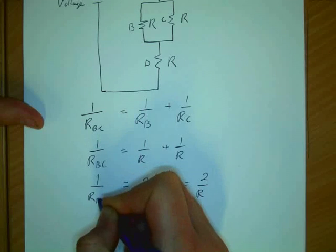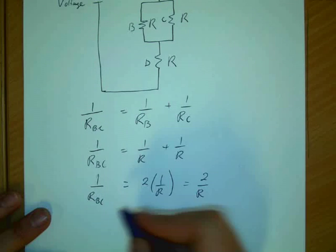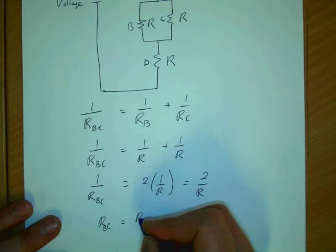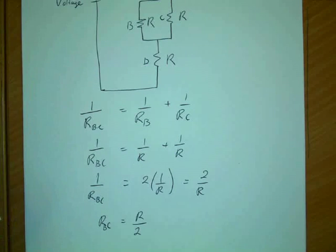That's 1 over R_BC. So to find R_BC, we just flip it and we get R over 2. Correct?